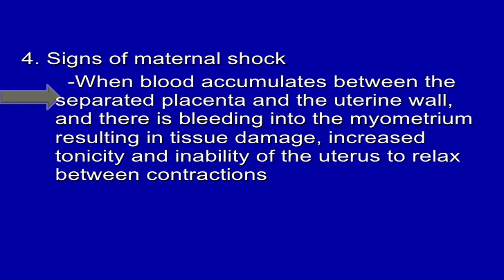There are signs of maternal shock when blood accumulates between the separated placenta and uterine wall, and there is bleeding into the myometrium resulting in tissue damage. There is also increased tonicity and inability of the uterus to relax between contractions.